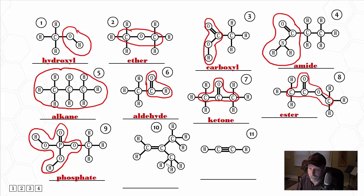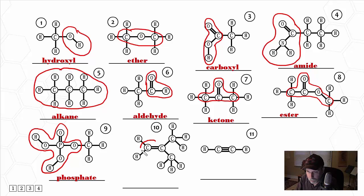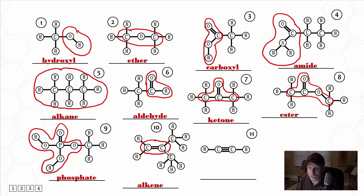On to number 10. As you can see, this is only made of carbon and hydrogen again, unlike those with phosphorus or oxygen. So this is a hydrocarbon once again, but it doesn't have all single bonds — so it's not an alkane. Instead, we circle the carbon-to-carbon double bond, and this is now an alkene. So number 5 was an alkane, and number 10 is an alkene.